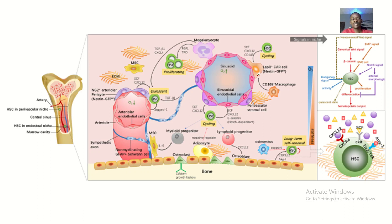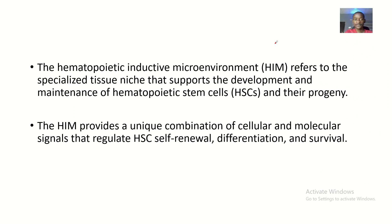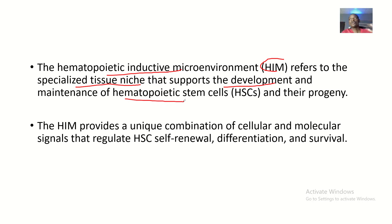We'll be doing subsequent lectures to talk about the composition of the microenvironment of a bone marrow. The hematopoietic inductive environment, also known as HEME, refers to the specialized tissue niche that supports the development and maintenance of hematopoietic stem cells and their progeny — those cells that are formed from the hematopoietic stem cells — through self-renewal, differentiation, and survival.